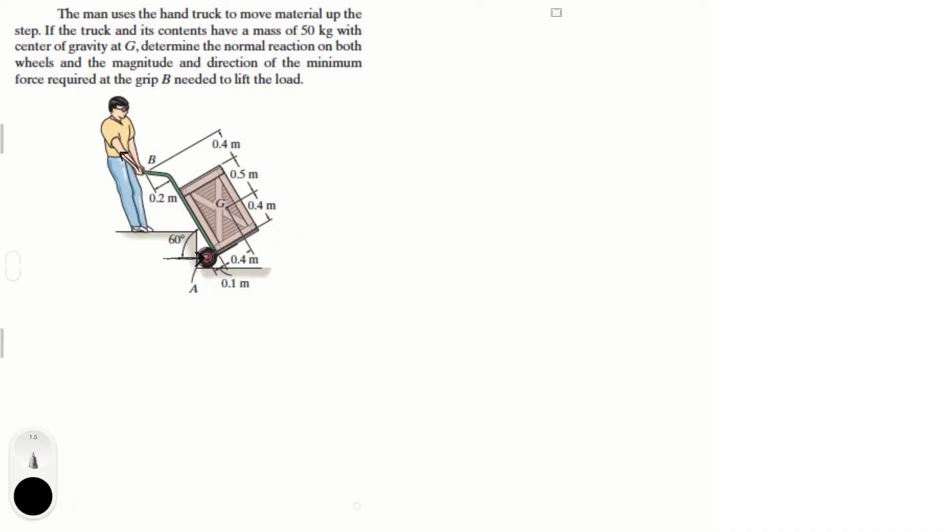At A you only have a horizontal reaction, because at the point where you're lifting it you don't have a vertical reaction anymore. So A only has a horizontal reaction — we're going to call it F_A.